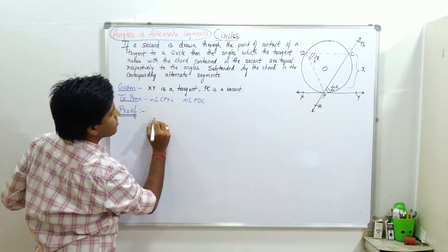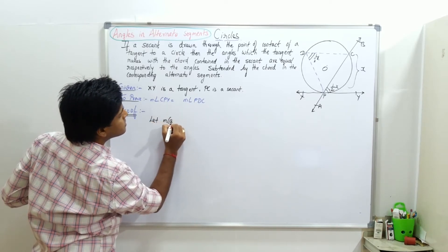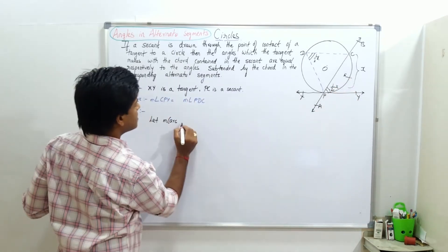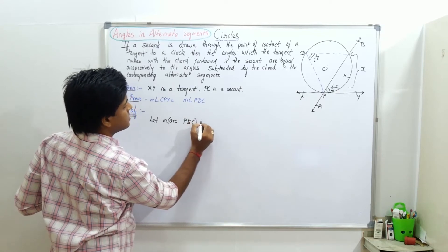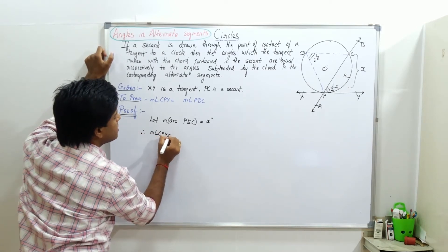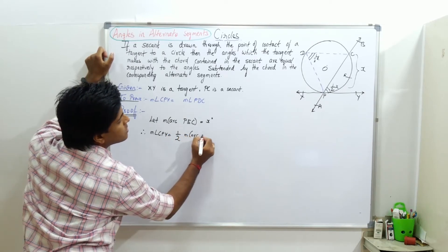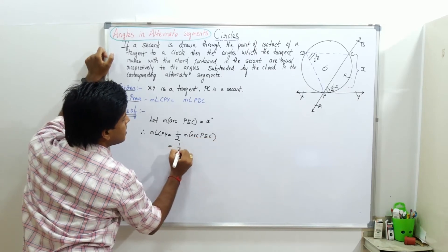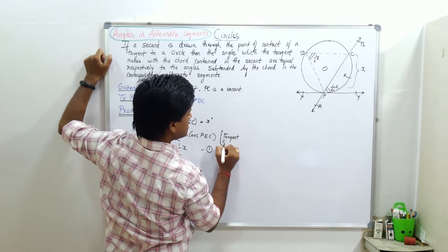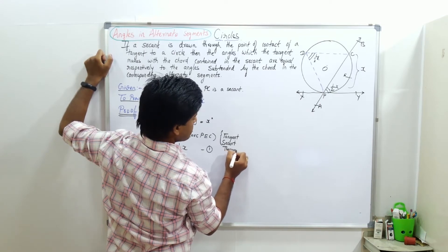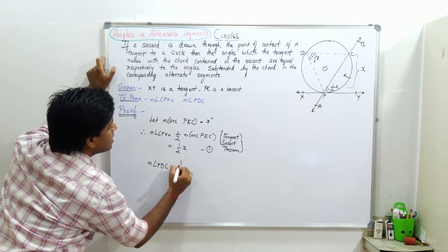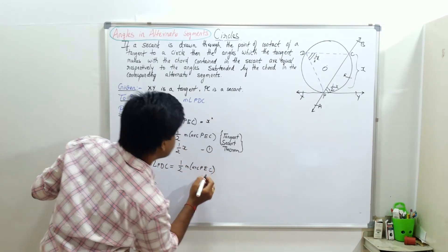Let measure arc PEC equal to xg. Therefore, measure angle CPY equals half of measure arc PEC, so this is half of xg. We are using the tangent-secant theorem. Now, measure angle PDC equals half of measure arc PEC, so this is also half of xg.